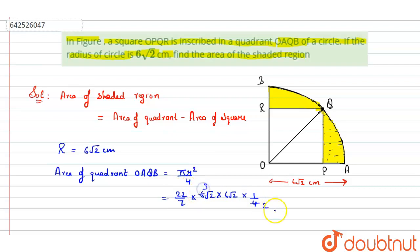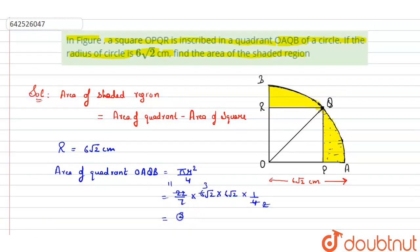We're getting 396 divided by 7, that is 56.57 square centimeter. This is the area of quadrant.